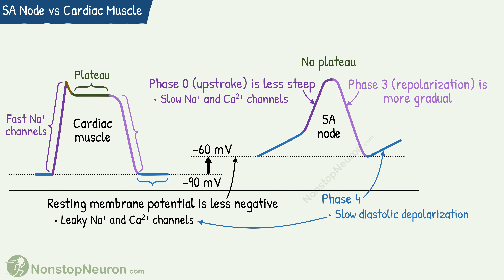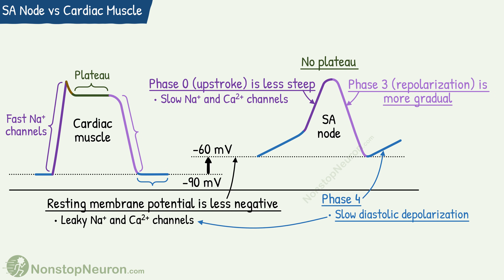I hope this video makes your understanding of action potentials in cardiac myocytes and SA node clearer. Quick recap: in the SA node, the resting membrane potential is less negative, upstroke is less steep, there is no plateau, phase 3 is more gradual, and phase 4 shows slow diastolic depolarization.